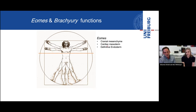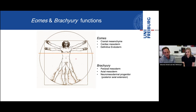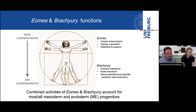Eomes specifies cranial mesenchyme, cardiac mesoderm, and the entire definitive endoderm. The second T-box transcription factor, Brachyury, acts slightly later and more posterior in the embryo to specify paraxial mesoderm and axial mesoderm, and it's well known for its function in the elongation process, which depends on neuromesodermal progenitors. Together, these two T-box transcription factors account for the specification of more or less all the mesoderm and endoderm in the embryo.